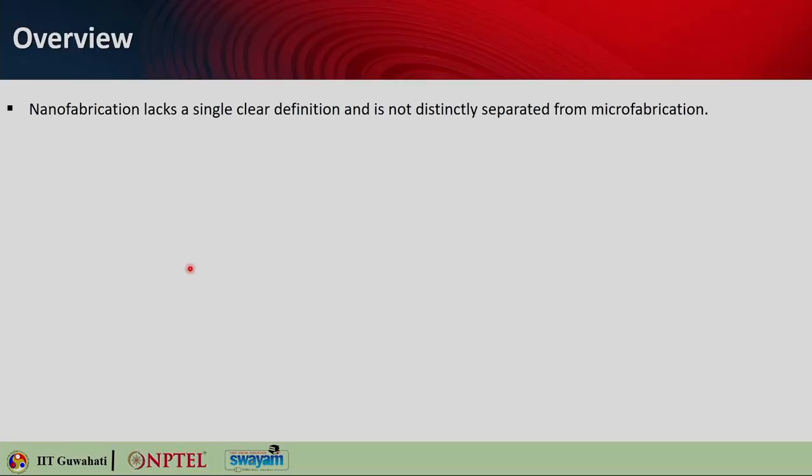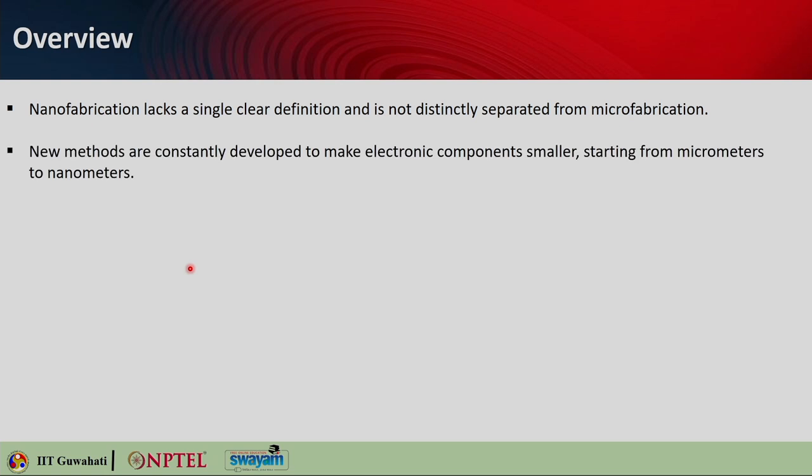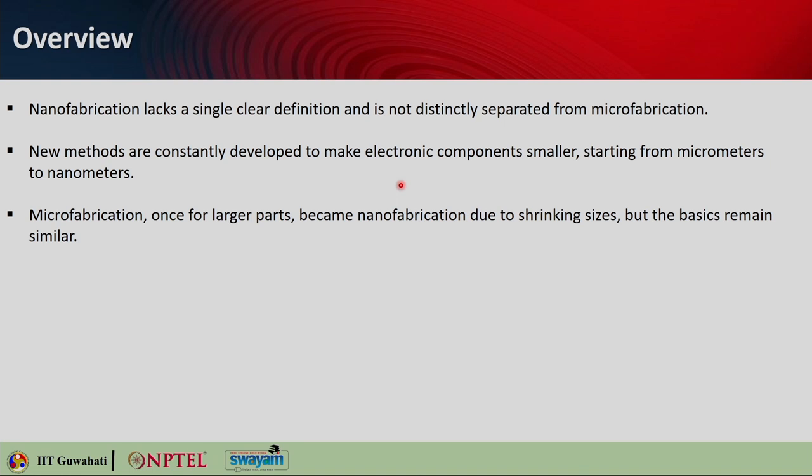It will not be a very extensive overview or in-detail study of the different fabrication methods. I will try to touch upon different topics so that you have a basic idea of how to realize the structures that we have discussed. When we talk about nanofabrication, nanofabrication lacks a clear definition and it is not very distinctly separated from the term microfabrication. New methods are constantly developed to make electronic components smaller, starting from micrometers to nanometers, and the same techniques can also be used for nanophotonics, plasmonics and metamaterials.